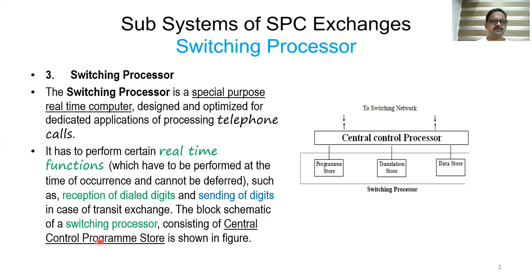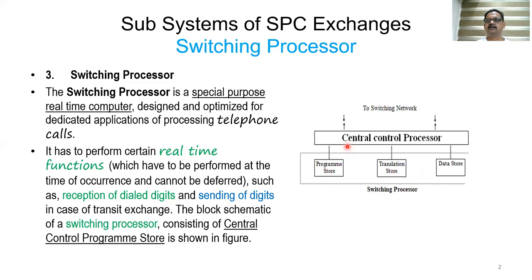The block schematic of the switching processor consists of a central control processor connected to three different stores: program store, translation store, and data store. These are all connected to the central control processor, which in turn is connected to the switching network. We will study each one by one.